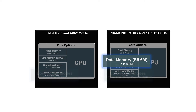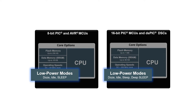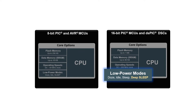Low power is a key concern in many embedded applications and both architectures feature various capabilities to minimize power consumption. In conjunction with industry-leading low current consumption, Doze, Idle, and Sleep modes of operation provide flexible CPU and peripheral clocking options with the ability of many peripherals to operate in these lower power states. Additionally, 16-bit devices further provide a deep sleep option which further reduces current consumption by removing power to RAM memory cells.